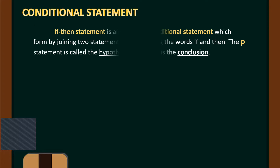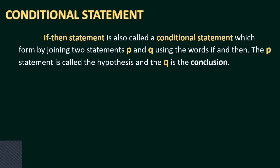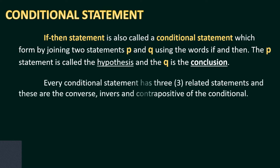Our conditional statement — let us recall — an if-then statement is also called a conditional statement, which is formed by joining two statements, P and Q, using the words 'if' and 'then.' The P statement is called the hypothesis, and Q is the conclusion. Every conditional statement has three related statements: the converse, inverse, and contrapositive of the conditional.